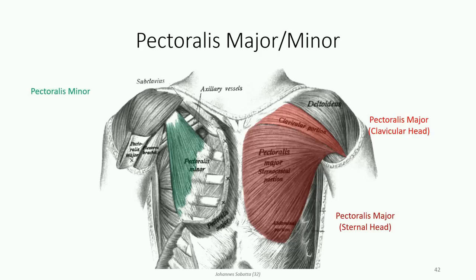Though it shares part of its name with the major, the pectoralis minor is much smaller with a very different functional role. It originates off the coracoid process, inserting on ribs 3 through 5. It is thought to play a role in stabilizing the scapula to facilitate movements at the shoulder joint, as well as elevate the ribs during active breathing. It also receives its blood supply from the pectoral branch of the thoracoacromial trunk, but unlike the pectoralis major, it is innervated by the medial pectoral nerve exclusively.